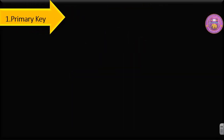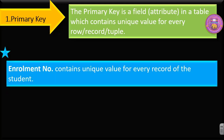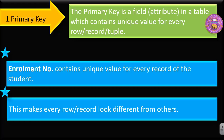The first one is primary key. The primary key is an attribute in a table which contains unique values for every row, record, or tuple. Note that row, record, or tuple means one and the same thing, and field and attribute are also one and the same thing. Enrollment number contains unique values for every record of the student, and this makes every row or record look different from others.